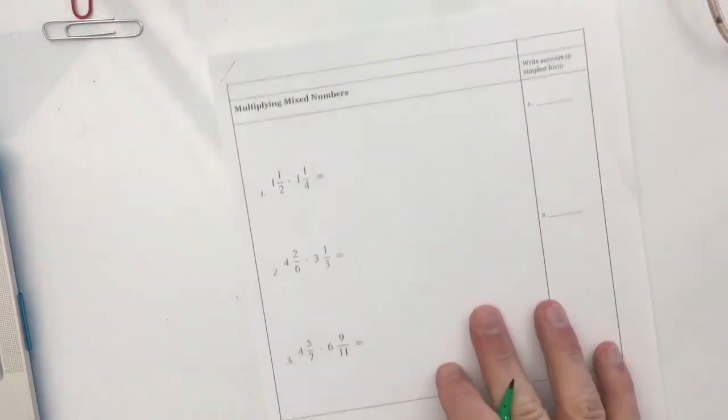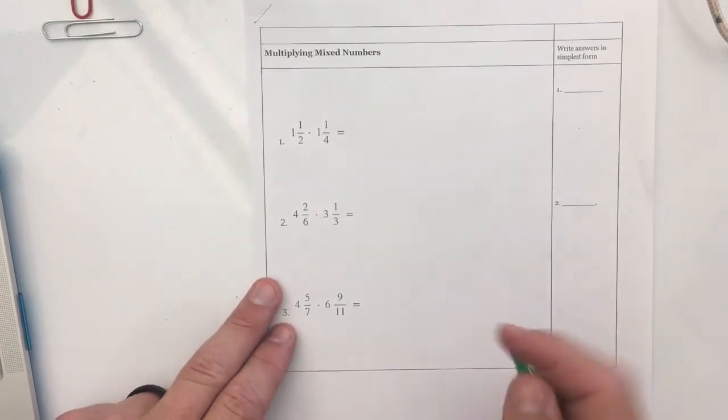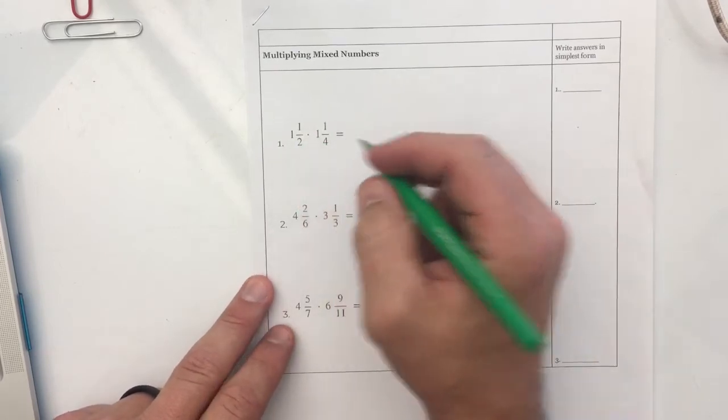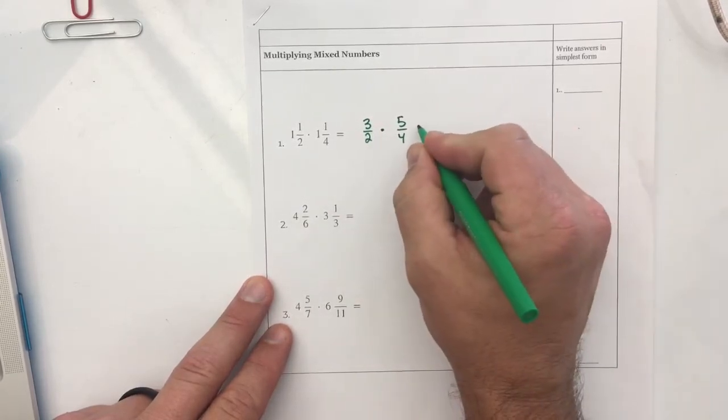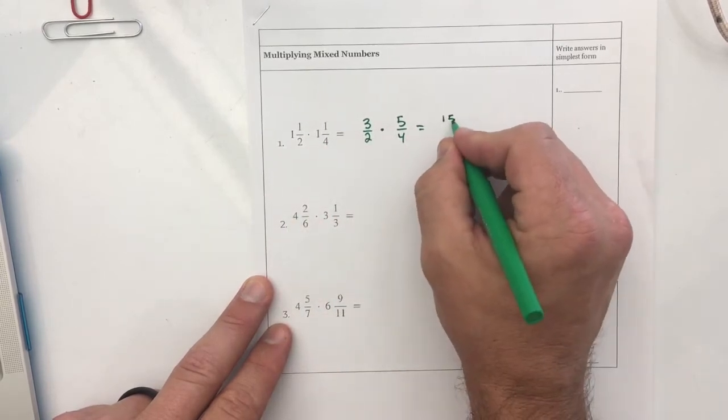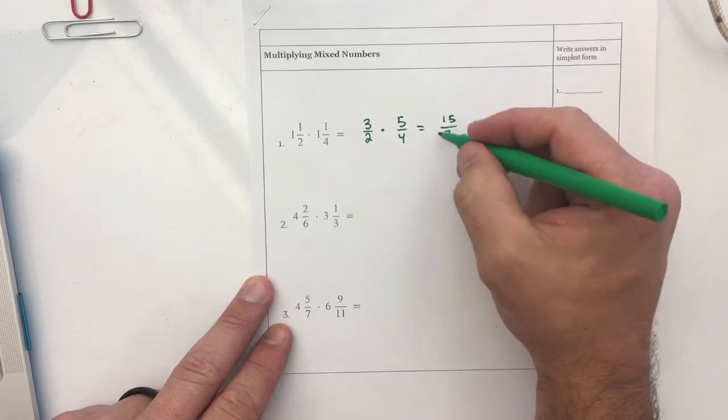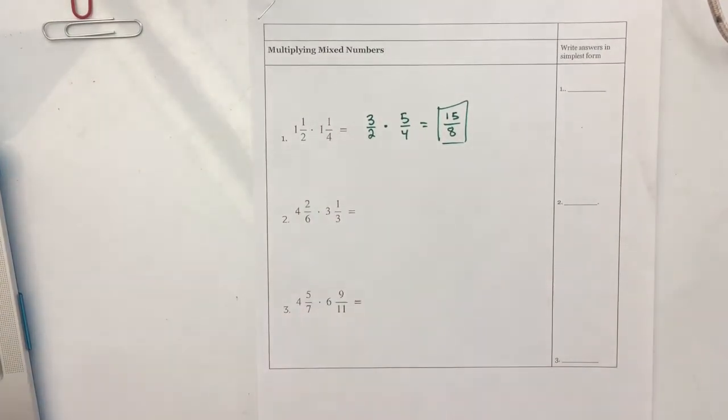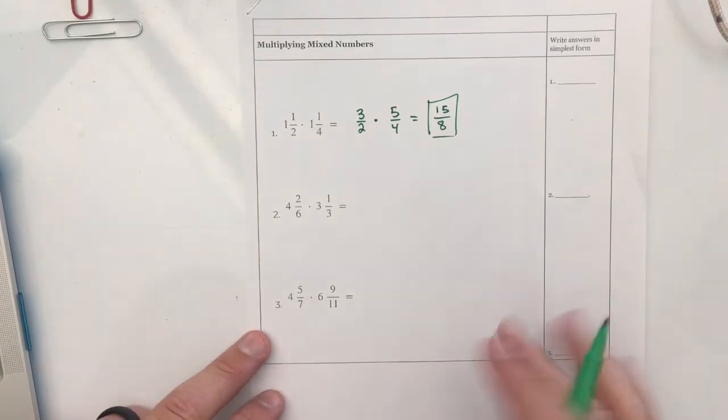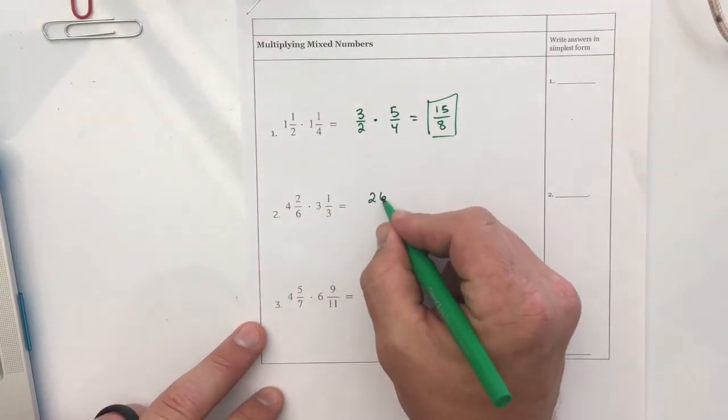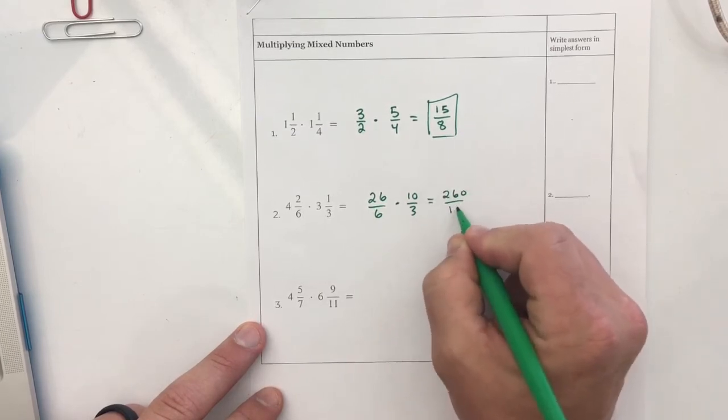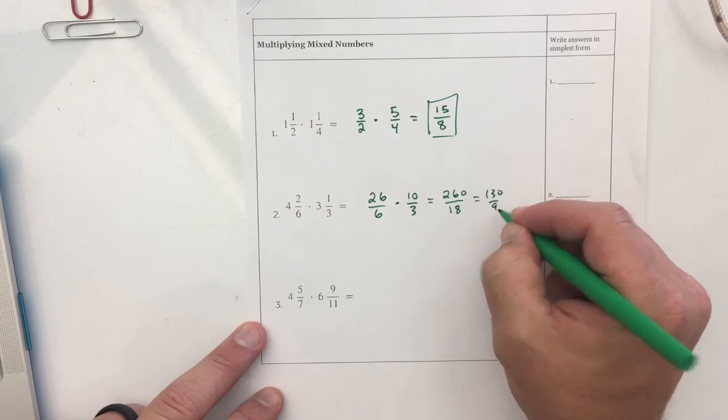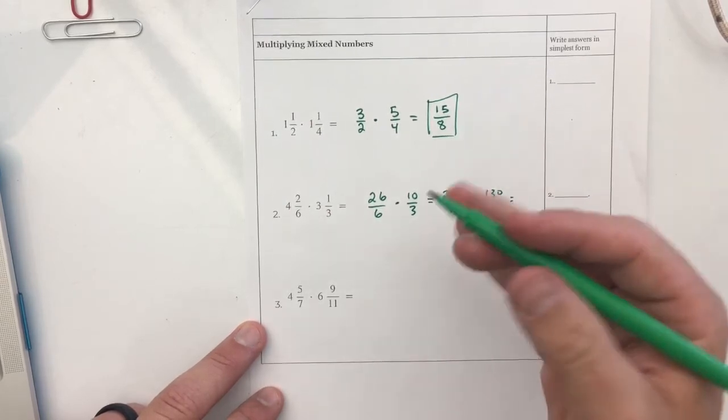And now, everybody's favorite, multiplying mixed numbers! I have to convert to improper fraction first. One and a half is three-halves, times one and a fourth is five-fourths. If I multiply straight across, I have fifteen-eighths. We had a lot of people making some silly mistakes with multiplying, and they were doing all kinds of stuff. Cross-multiplying, doing weird... Just maybe some people, a lot of people added some parts and multiplied other parts, so fractions are complicated. Four and two-sixths is twenty-six-sixths times ten-thirds, so I get two hundred and sixty-eighteenths, which is a hundred and thirty-ninths, which is fourteen and four-ninths. All of those answers are okay.